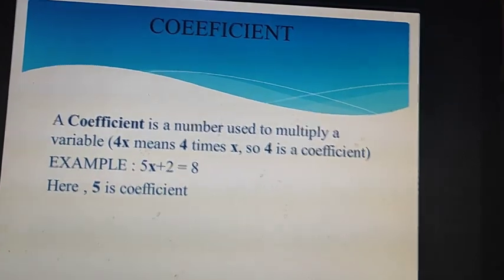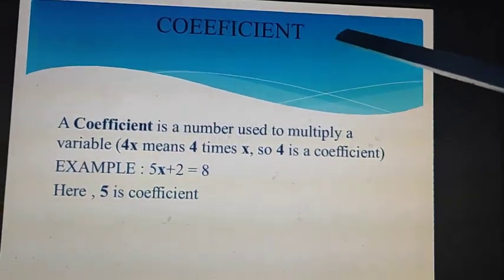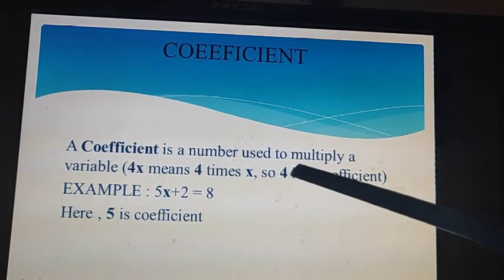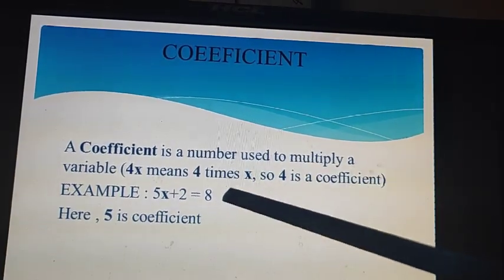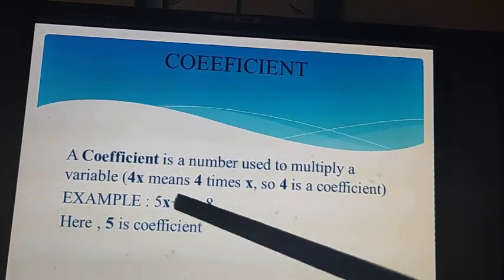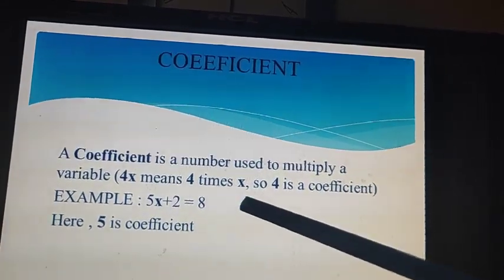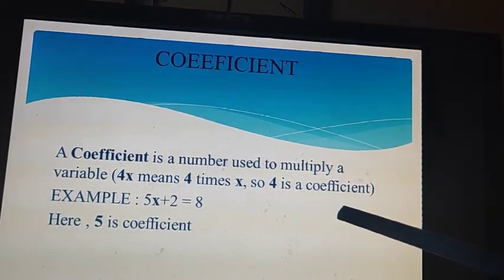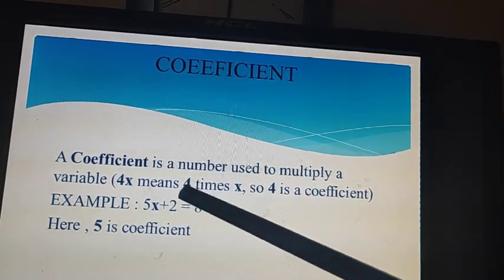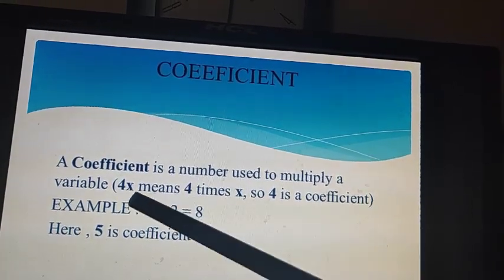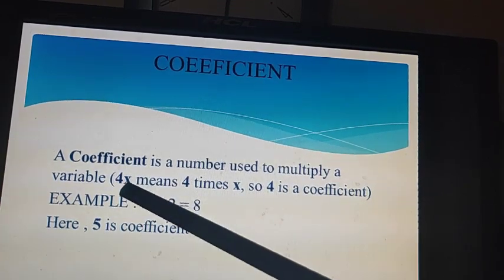Next is coefficient. What are coefficients? A coefficient is a number used to multiply a variable. For example, 4x means 4 times x, so 4 is a coefficient. This numerical value which is multiplied with the variable is called a coefficient.